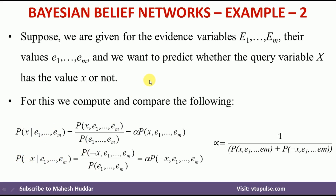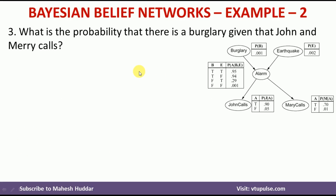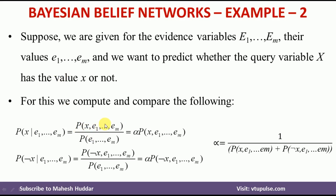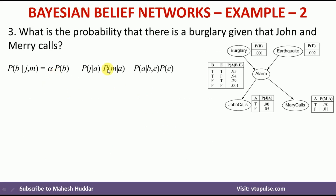In our question, we want to find the probability that there is a burglar given John and Mary call. There are two evidences given to us — John and Mary — and we want to find whether there is a burglar or not. So we need to find P(B | J, M) and P(¬B | J, M), which is equivalent to alpha multiplied by the joint probability distribution of all events. We start writing the joint probability distributions, which is nothing but the numerator part.